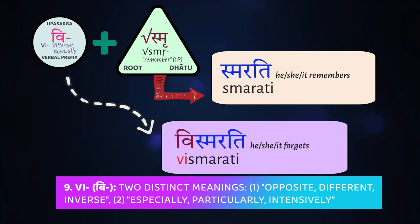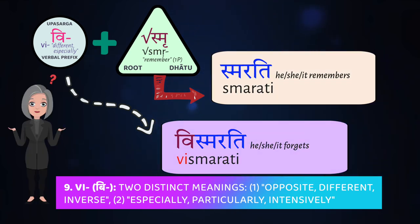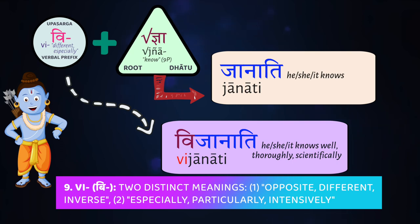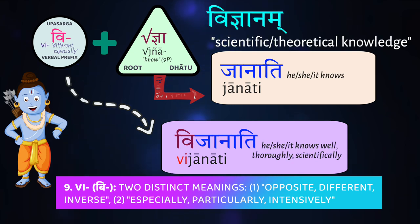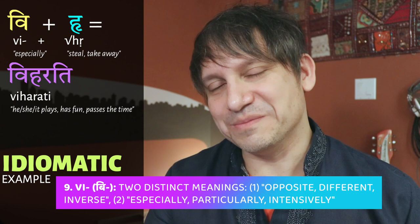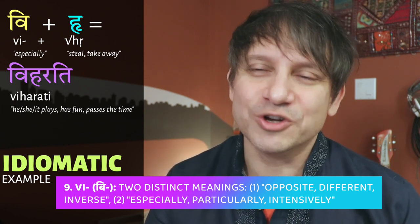The prefix vi can have two meanings: one is the opposite of something, flipping the meaning of the verb inversely; the other is intensive, meaning 'especially.' So if smṛ means 'to remember,' vi-smṛ means 'to forget' — sā smarati, 'she remembers'; sā vismarati, 'she forgets.' The intensive meaning comes with vi plus jñā: vijñā means 'to know fully, know well.' Rāmaḥ vijānāti — 'Rāma especially knows, knows thoroughly, scientifically.' The Sanskrit word for science is based on this root — it's the verbal noun vijñāna.